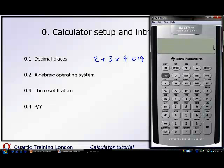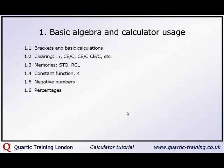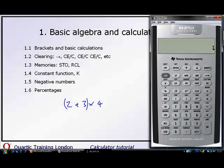The calculator is now set up and ready to use. Section one: Basic algebra and calculator usage. Before we looked at the calculation 2 plus 3 times 4. Let's say we actually want to do chain mode. On the calculator, press clear. You have the brackets here. So we press open bracket 2 plus 3 close bracket times 4 equals and there's your 20.